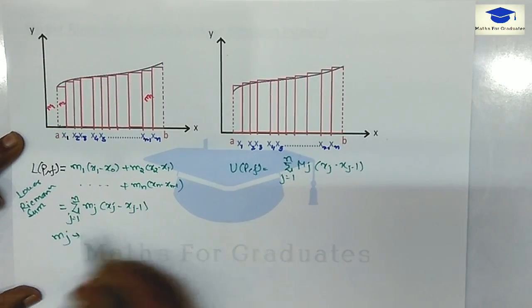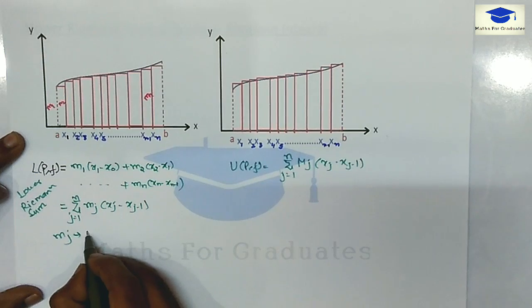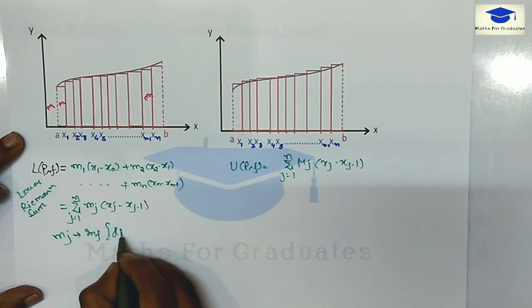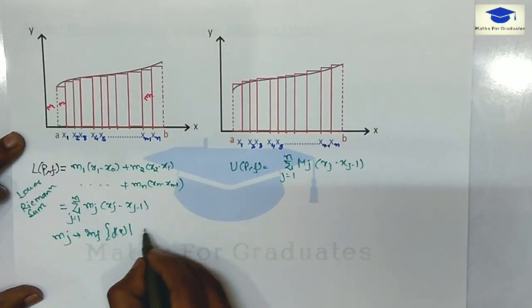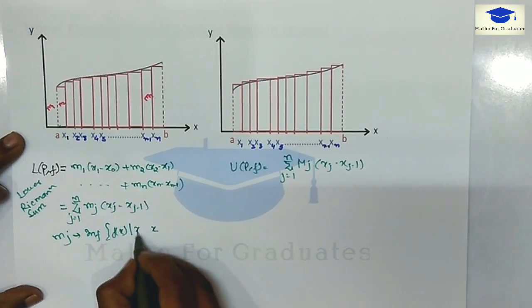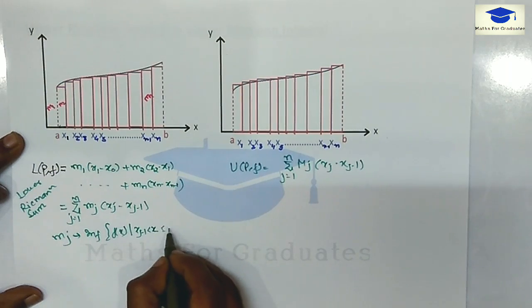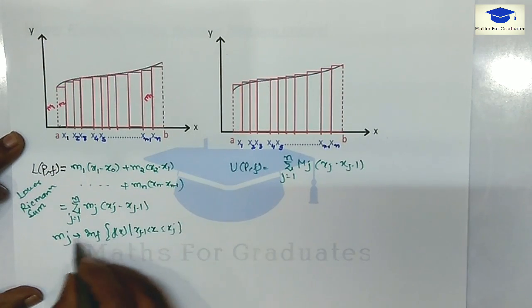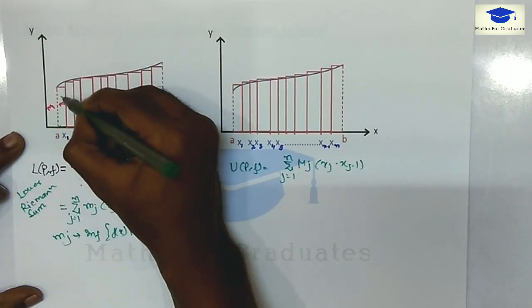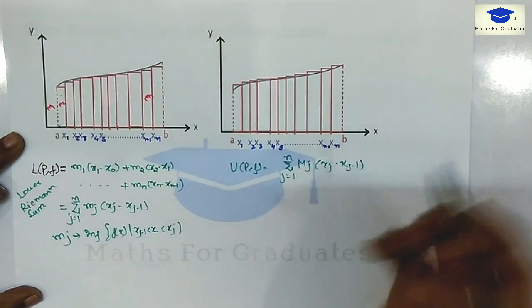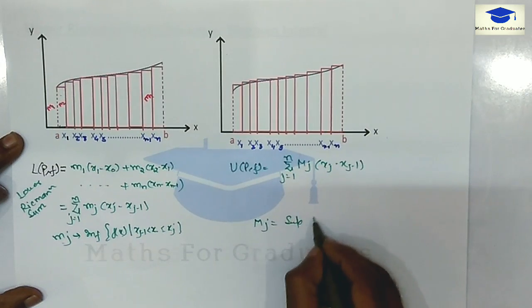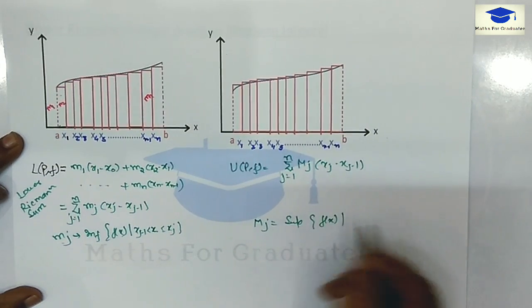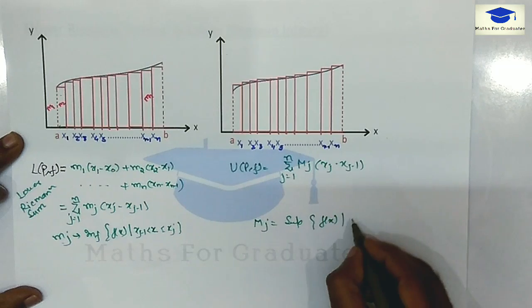Here, small mⱼ is the infimum of the function on the jth interval, and capital Mⱼ is the supremum of the function on the jth interval.